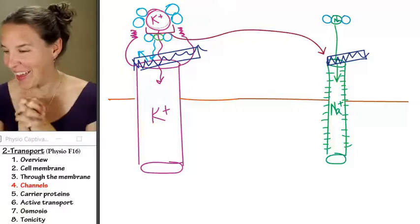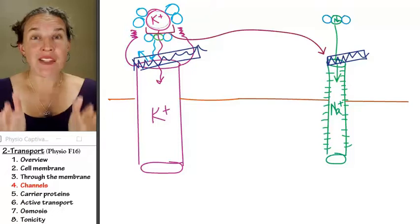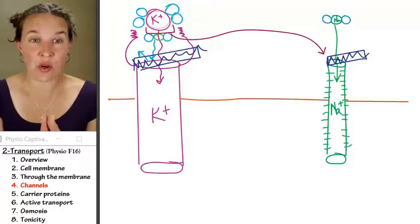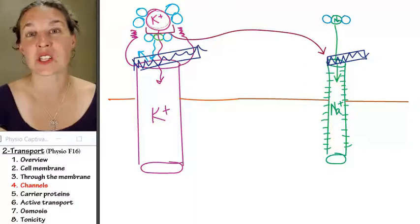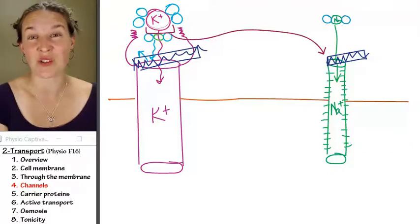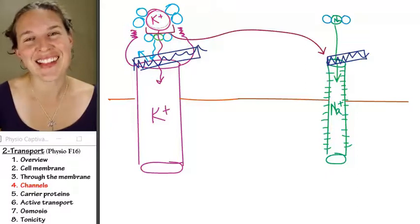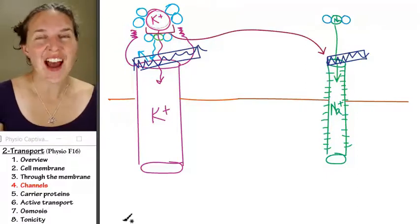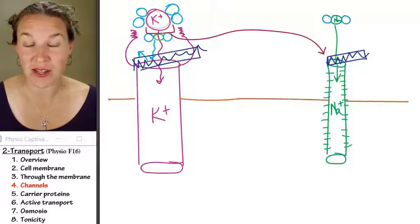Channels are so cool. If you have a ton of channels in your cell membrane and you open them all up, you can imagine that diffusion can actually happen super fast through a channel. I love that so much. Carrier proteins are equally as cool as channels. So let's go talk about carrier proteins next.